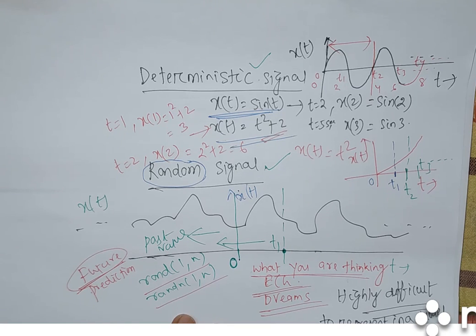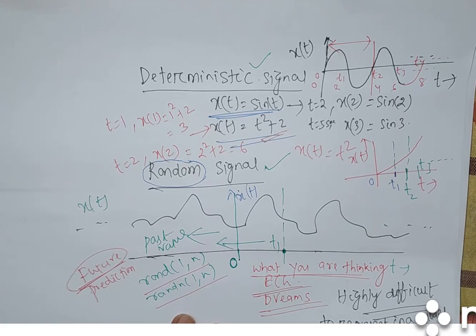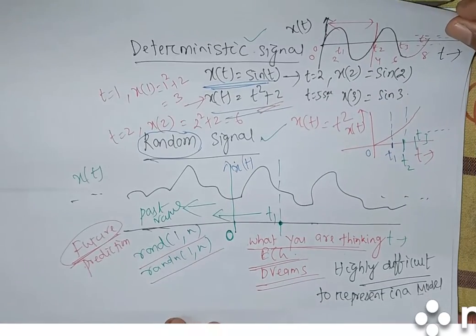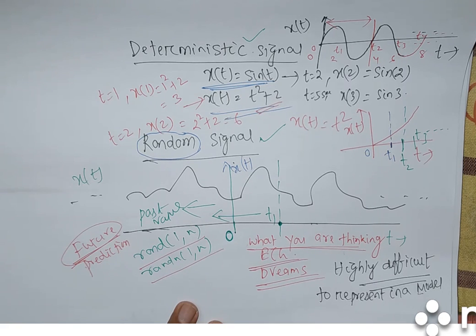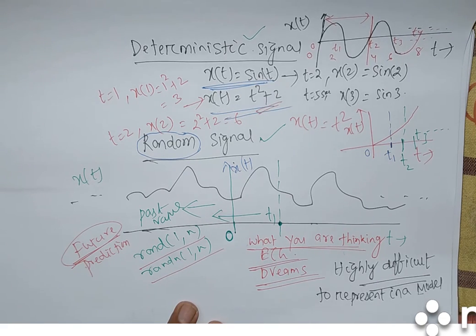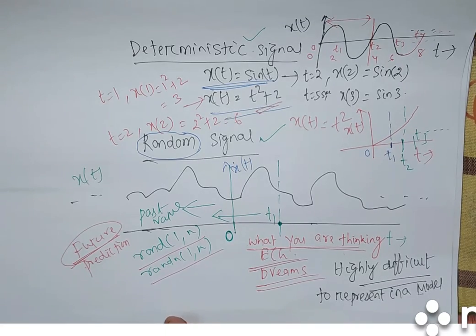There is no point being interested in deterministic signals — if you know everything, then there is no interest in life. Some randomness is required, and actually it is random only. Because of randomness we are really excited about life. All our signals are random signals.